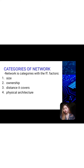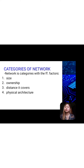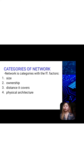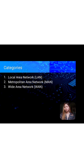We have categories of network. Network is categorized by the following factors: number one is size, number two is ownership, number three is distance it covers, and the last is physical architecture. Categories of network are used for everything from accessing the internet or printing a document to downloading an attachment from an email. Networks are the backbone of use — they can refer to a small handful of devices within a single room to millions of devices spread across the entire globe.